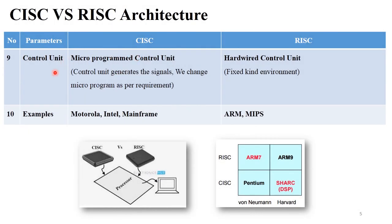The next point is the control unit. The control unit is generally used to fetch or carry signals and provides signals for performing particular tasks. CISC architecture supports a micro program control unit, and RISC architecture supports a hardwired control unit. In CISC, there are various micro programs — as per your requirement you can change those programs and perform a particular task. But in RISC, it has a fixed kind of environment with fixed programs, which is why it is called a hardwired control unit.